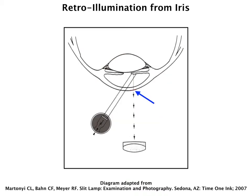A useful technique for highlighting corneal pathologies is retroillumination from the iris. In this technique, the slit beam is oriented about a 20 degree angle from the slit lamp, and the light is shown onto the iris right below the pathology that you want to highlight. Typically, this is also best when you have a little bit of background illumination to improve the overall quality of the photograph.